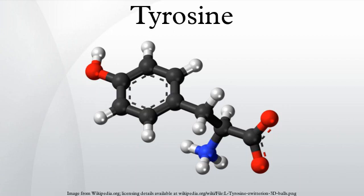Biosynthesis: in plants and most microorganisms, tyrosine is produced via prephenate, an intermediate on the shikimate pathway. Prephenate is oxidatively decarboxylated with retention of the hydroxyl group to give p-hydroxyphenylpyruvate, which is transaminated using glutamate as the nitrogen source to give tyrosine and alpha-ketoglutarate.